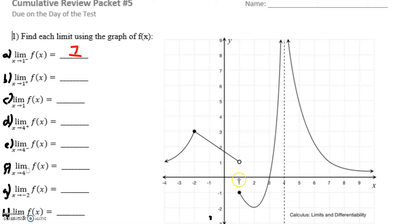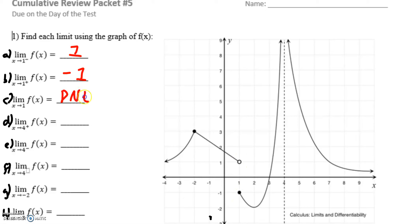If I look at positive one coming from the right, my graph starts over here, goes all the way up, but then we have to come on this side of the asymptote. As we approach one, the y value we're getting close to — and this time happened to be touching — is here at negative one. So my limit here is negative one. That means the limit at one itself does not exist, because the limits from the left and the right do not approach the same y value.